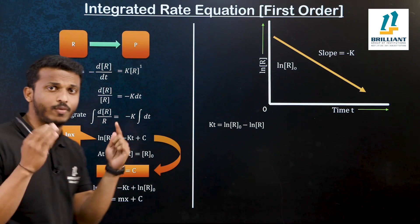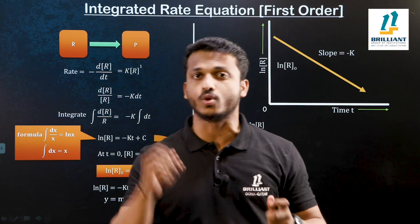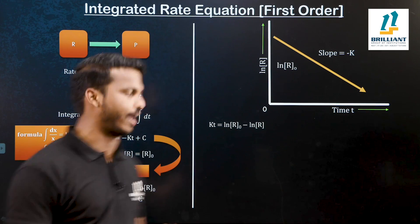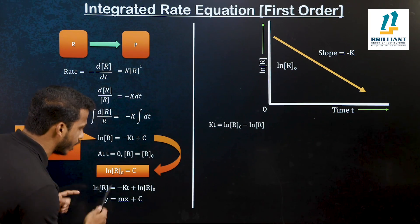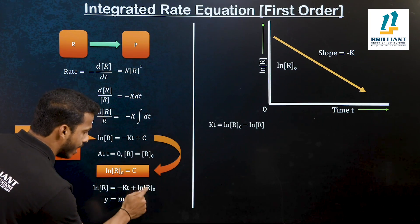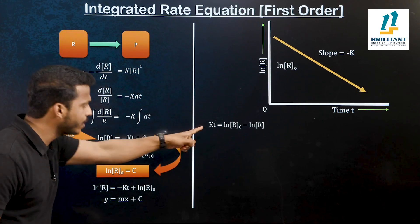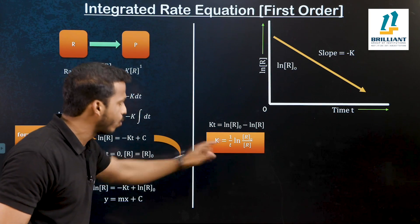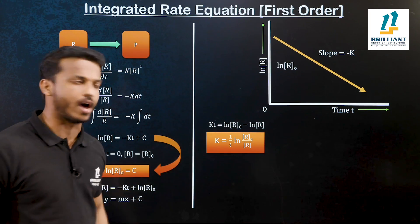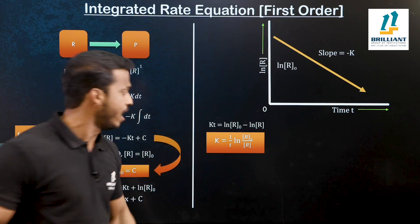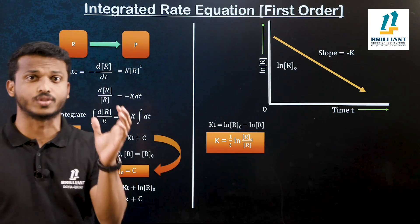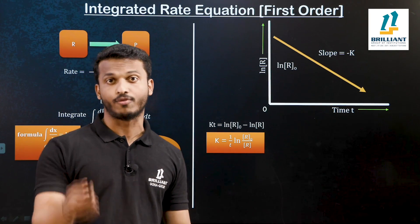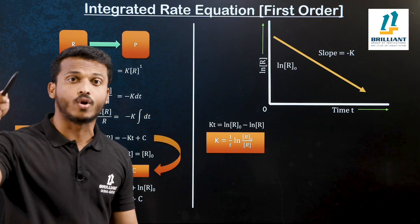We are doing this first order integrated equation to get the value of two things: one is K, the rate constant, and the other is T half, the half life. Let me rearrange this equation — bringing KT to the left side: KT equals ln R₀ minus ln R. From this, the expression for K is: K equals 1 by t into ln(R₀ divided by R). Here R₀ is the initial concentration of the reactant, and R is the concentration at time t.